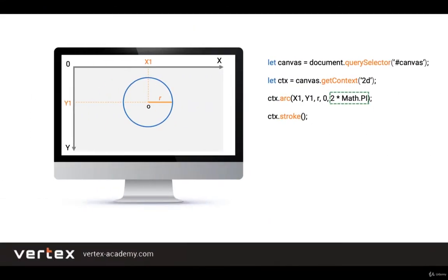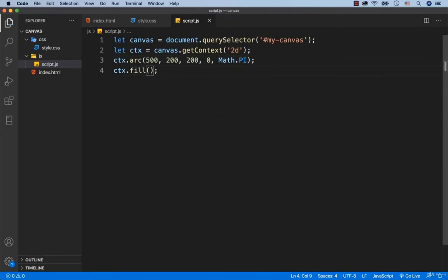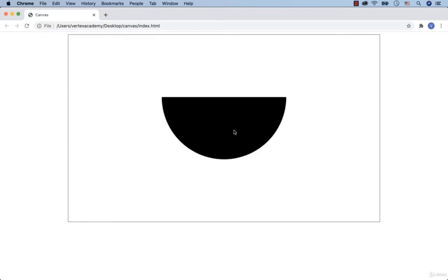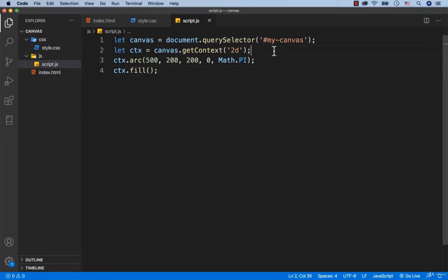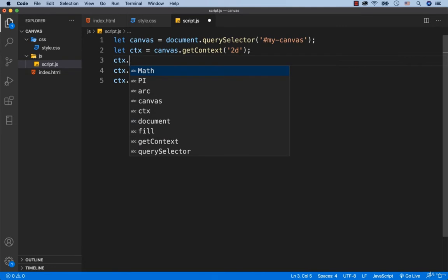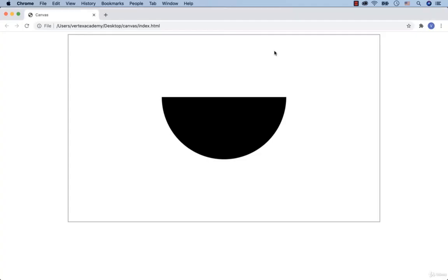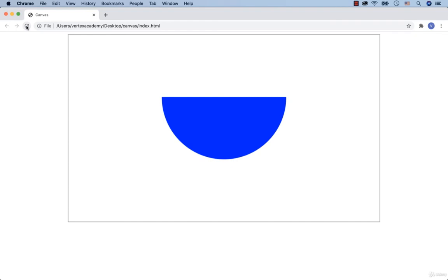How can we fill this semicircle with some color? We just need to use the function called fill instead of the function called stroke. So we change stroke to fill. And now our semicircle is black. To change the color we need to apply the property which we learned in the previous lesson. So we type in ctx.fillStyle. And let's set this color. We successfully change the color of the semicircle to the color blue.